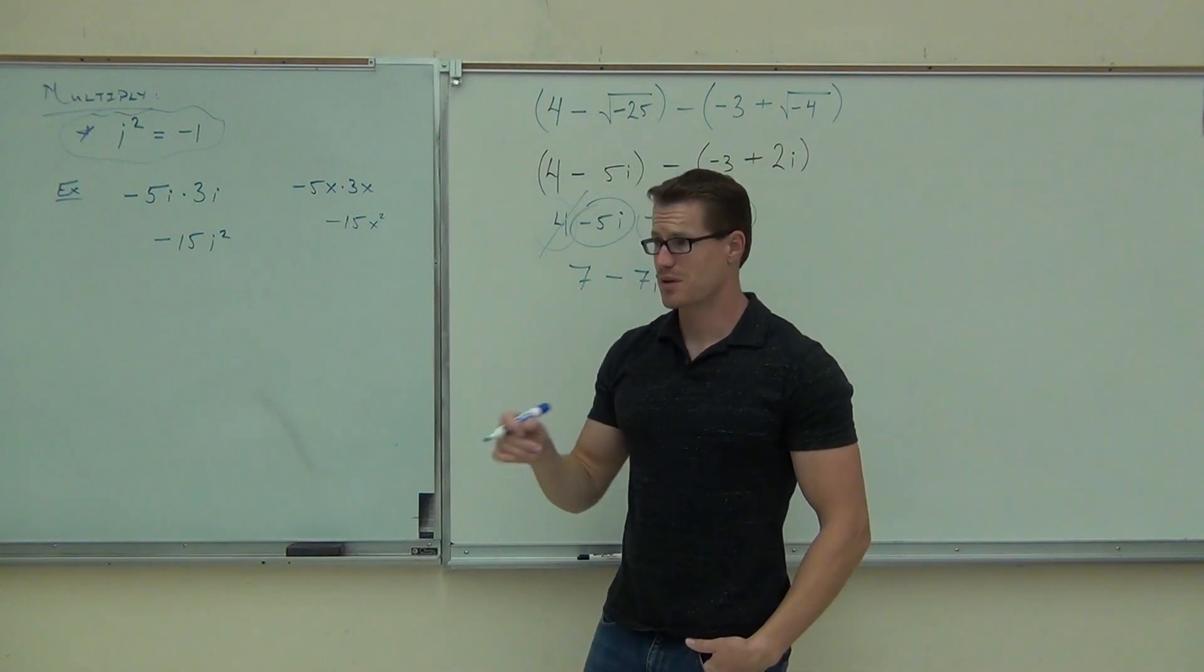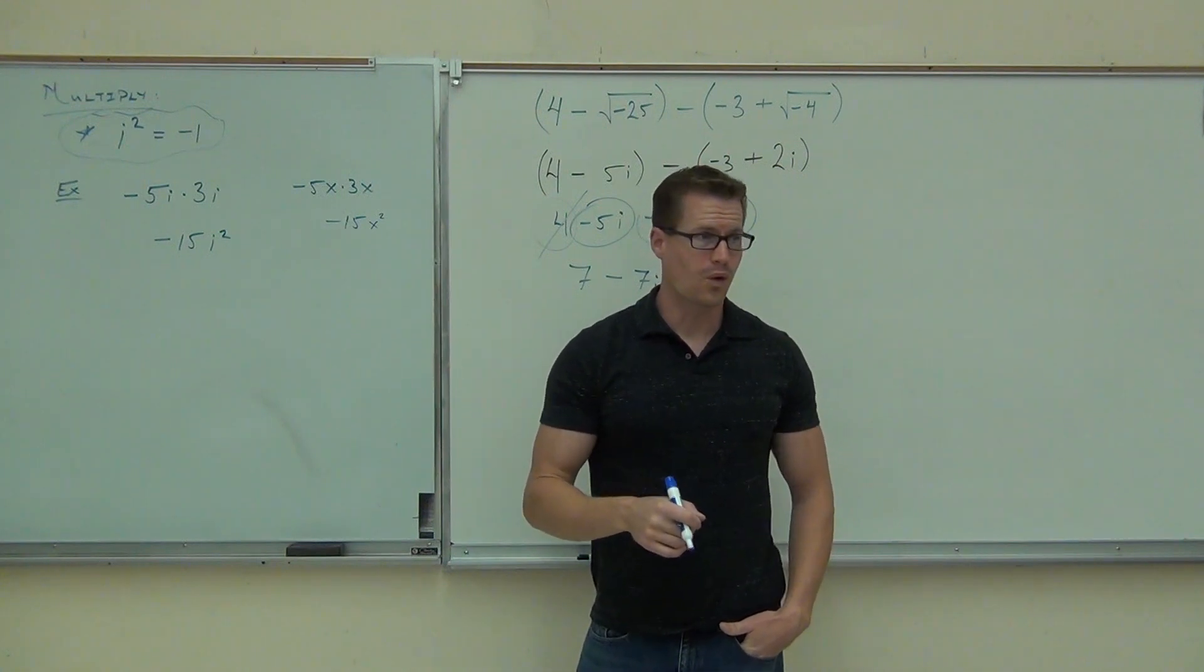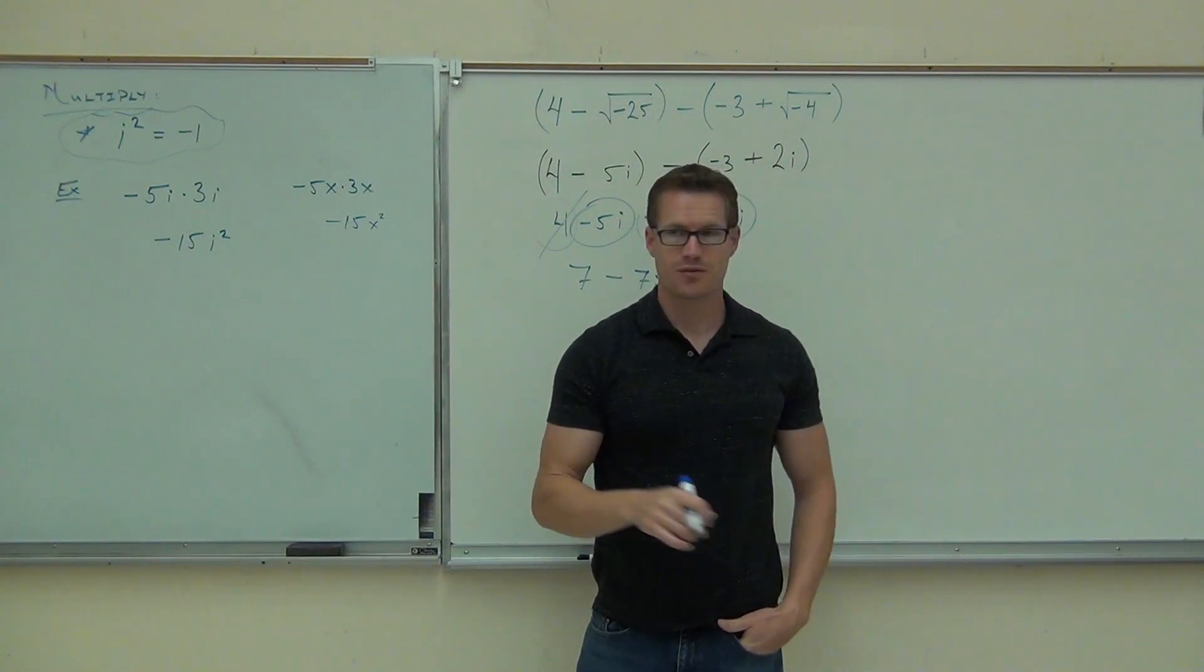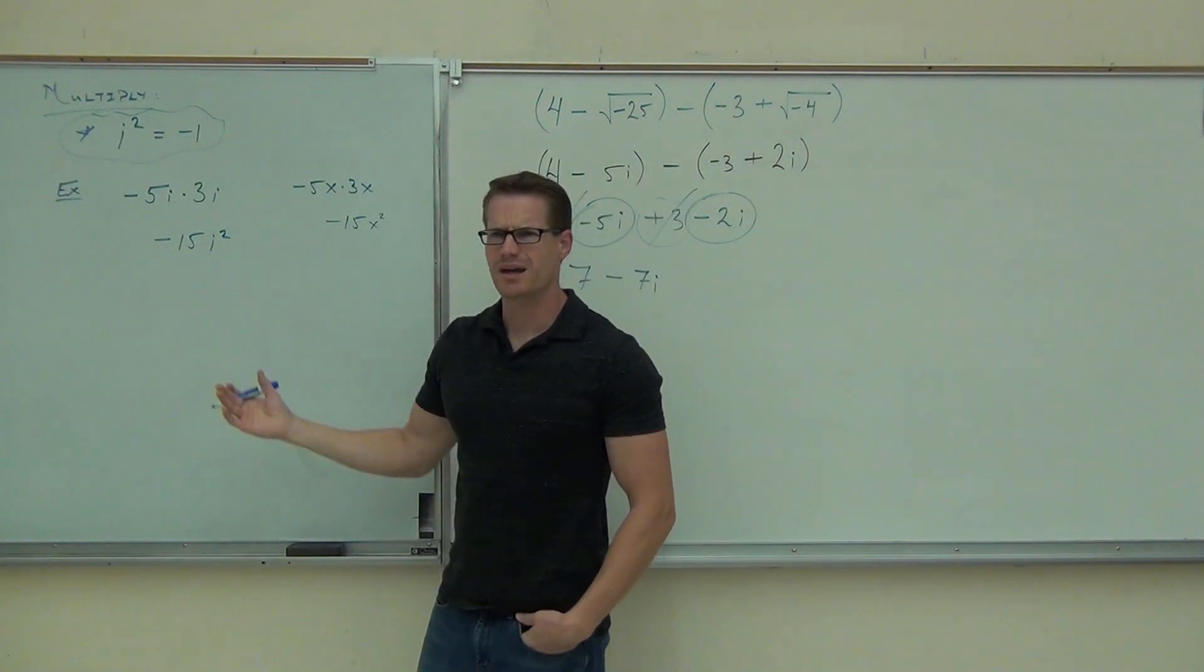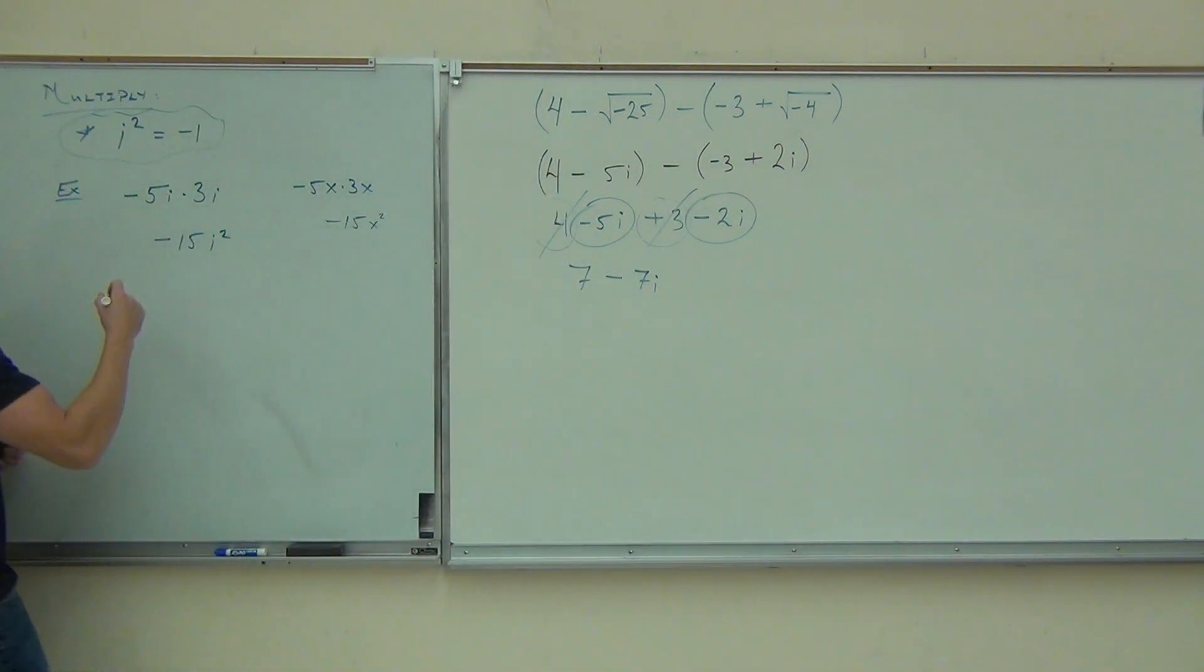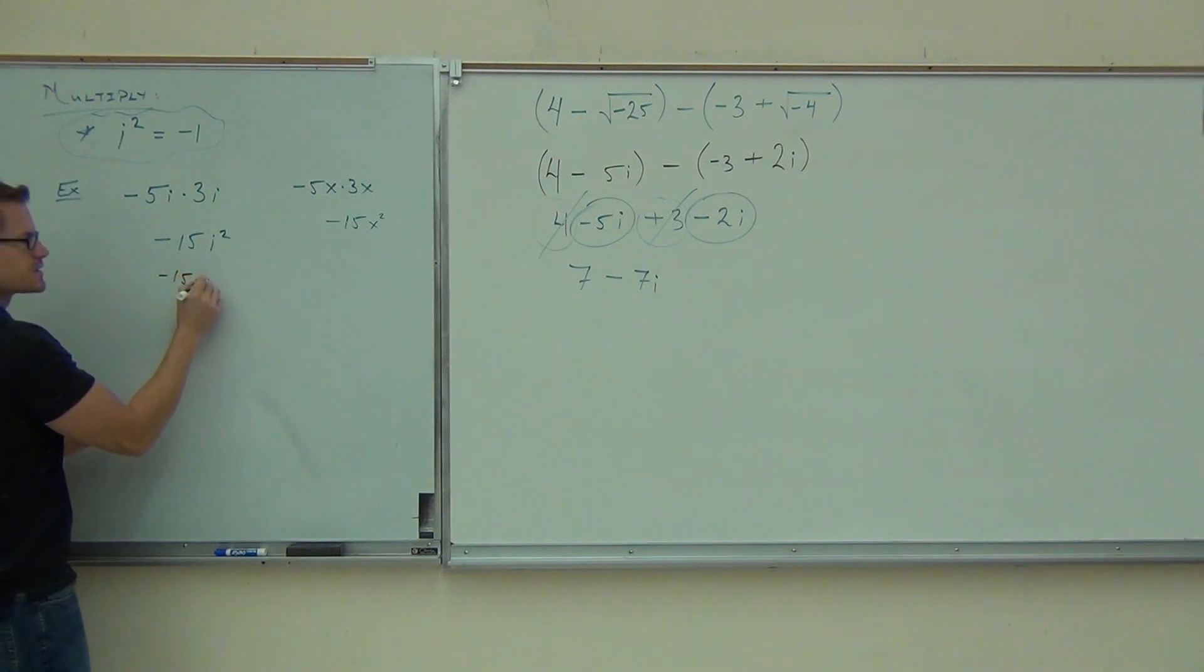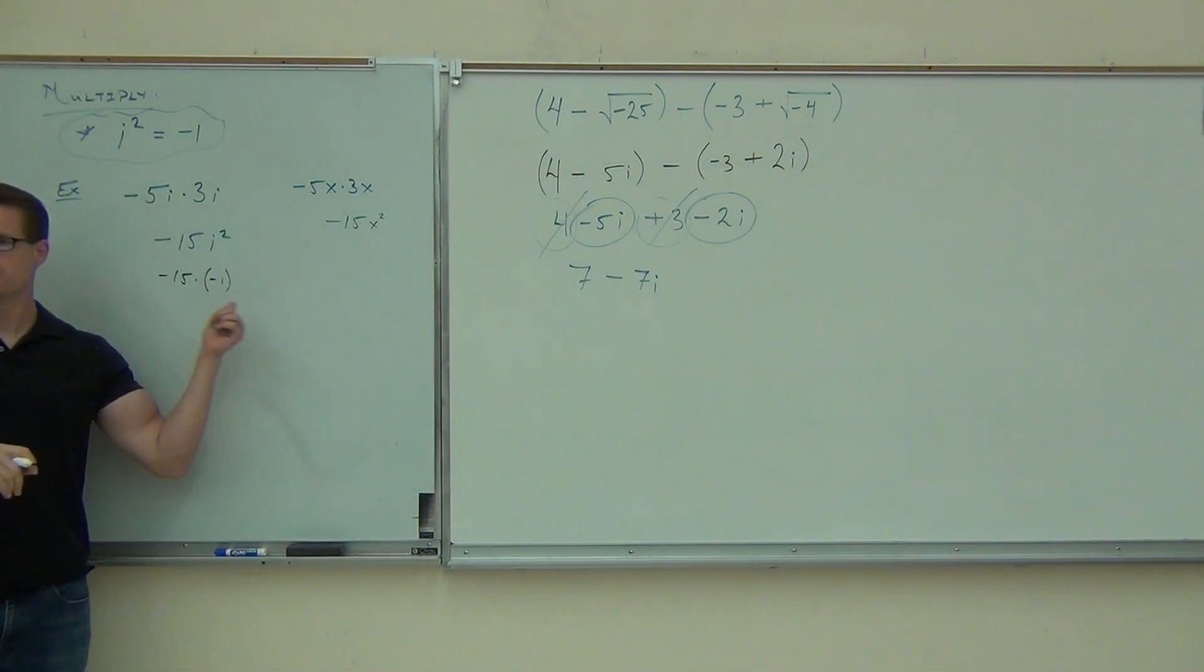Let me tell you something. If you finish with an i squared on your paper, you've either done something wrong or you're not done. So if you finish the problem with i squared, you can't have that. Why? How much is i squared? Negative 1. So instead of having negative 15 i squared, I know it's negative 15 times negative 1. Can I complete this problem? It's just negative 15 times negative 1.